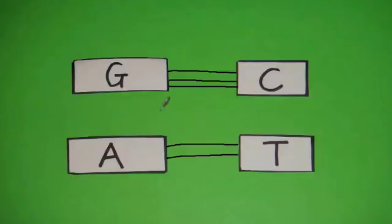In this rule, guanine pairs with cytosine and adenine with thymine and they join with hydrogen bonds. Notice that the G and the C have three hydrogen bonds between them while the A and the T have two.